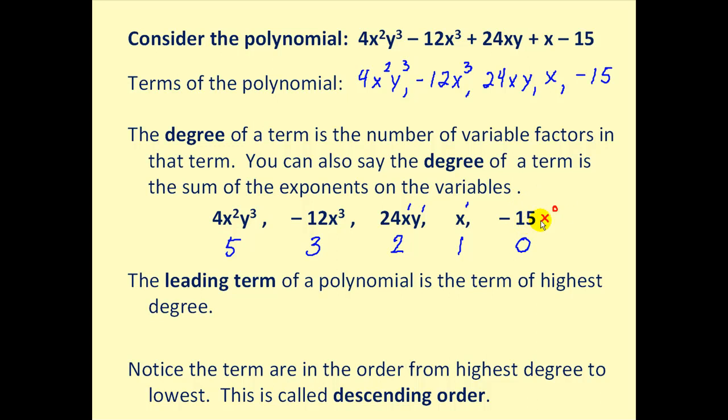The leading term of a polynomial is the term of the highest degree. So this term in the polynomial has degree five. Therefore, we call it the leading term.